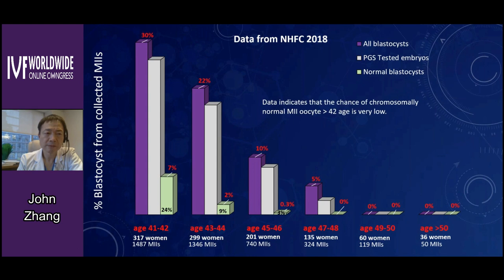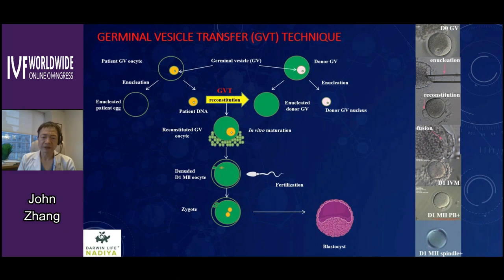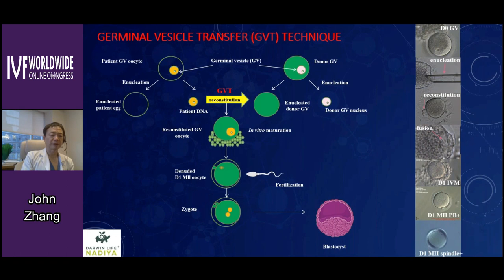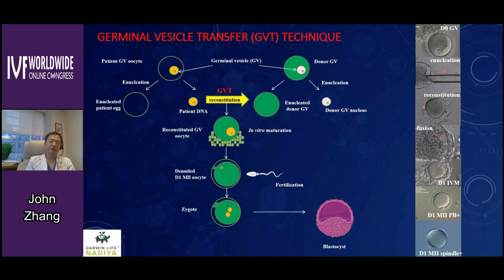Germinal vesicle transfer is still under investigation. The theory works well — taking the germinal vesicle from an immature patient egg and exchanging it with cytoplasm from the donor, then undergoing in vitro maturation and fertilization to obtain blastocyst stage embryos. However, this technique is still not clinically applicable due to three factors: number one, it is technically very challenging; number two, it has not yet been proved that GV transfer can rescue spindle anomalies; and number three, there is still a maturation issue to overcome. This is currently only an ongoing research project.